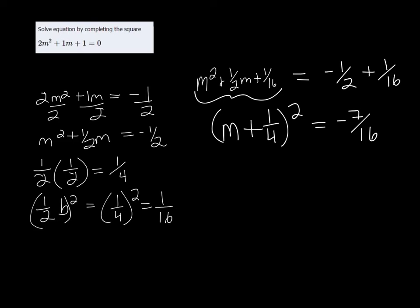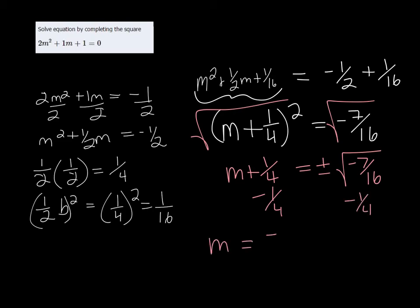I'm going to grab another color, and when we do that, we get M + ¼ on this side and plus or minus the square root of -7/16. So we want to subtract the ¼ over because we're trying to get M by itself. So we get M = -¼ ± √(-7/16), and the square root of 16 is just 4.